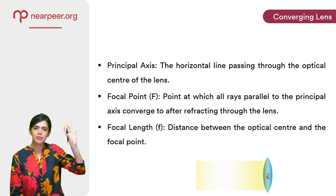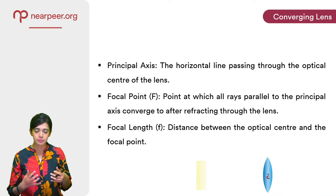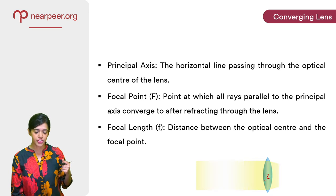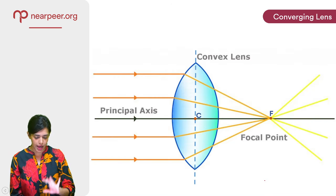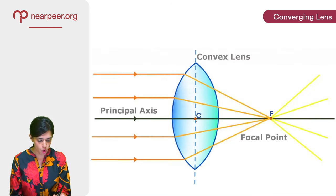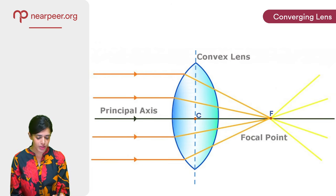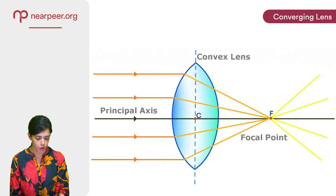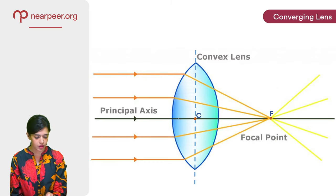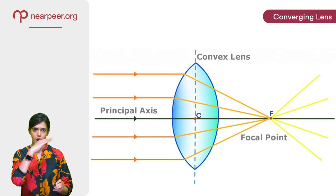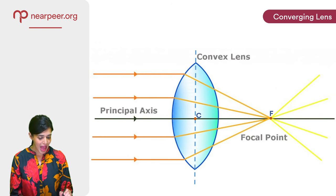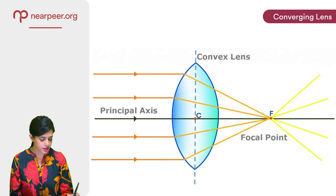Now I know this may seem like a lot of new information and it may be a little hard to digest. So I have a diagrammatic explanation of all these for you. So over here you see I have labelled the optical centre with a C and in green is the principal axis, it's the horizontal line that passes through the optical centre.